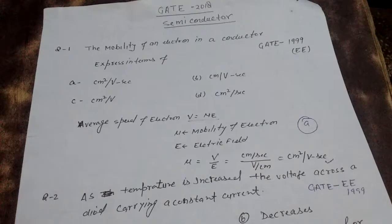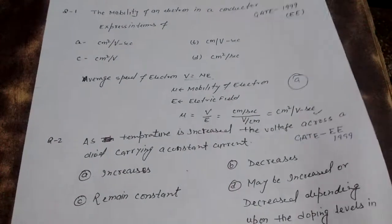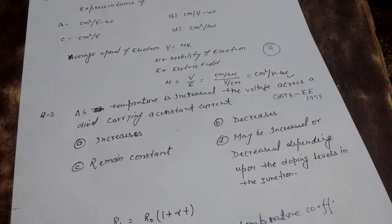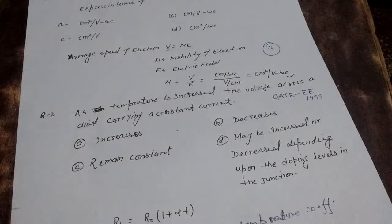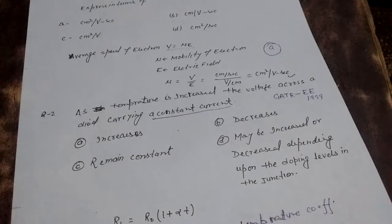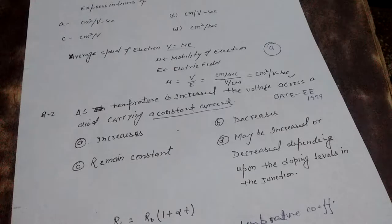This question was asked in GATE Electrical 1999. Now the second question: as temperature is increased, the voltage across a diode carrying constant current — options are: A) increased, B) decreased, C) remains constant, D) may be increased or decreased depending upon the doping level of the junction.